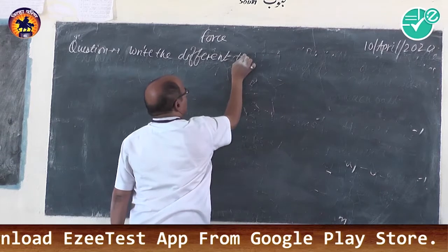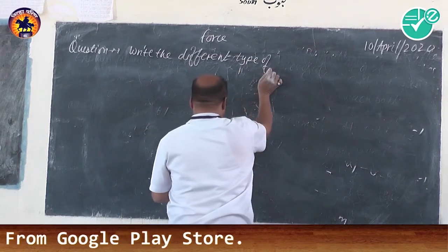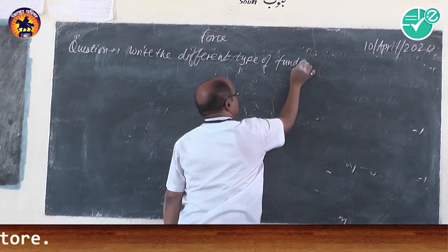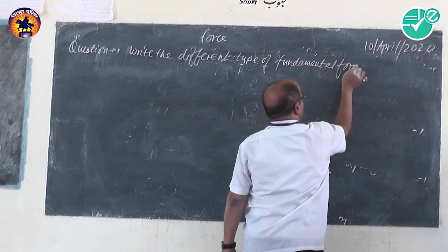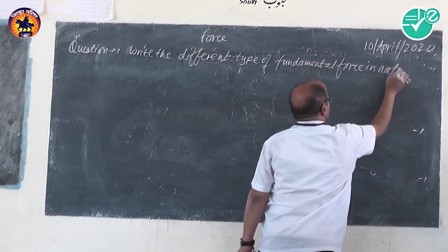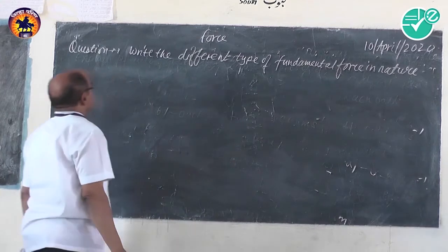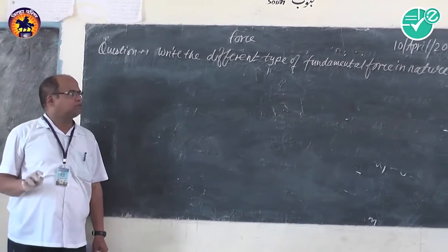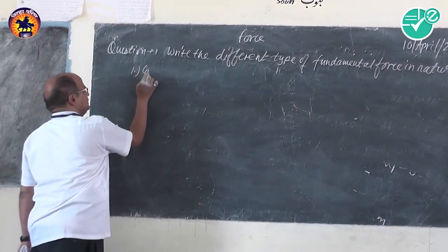There are four types of fundamental forces in nature. They are: gravitational force, electromagnetic force, strong nuclear force, and weak nuclear force.